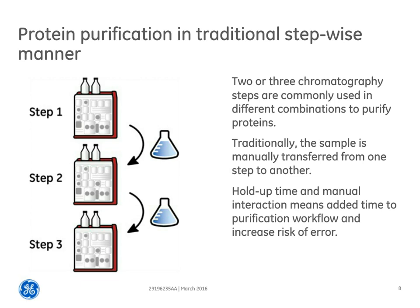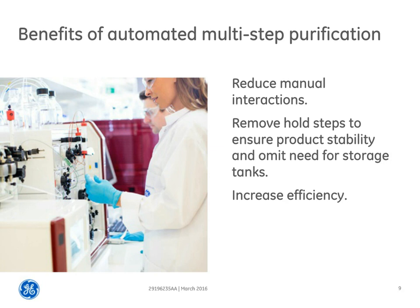In many cases, the conditions used to elute the protein in the first step are not optimal for the product. It could be too high a salt concentration or too low a pH, and therefore time between steps is crucial to maintain high stability of your product. By running automated multi-step purification using an ECTA Pure or an ECTA Avant, you will reduce manual interaction and remove the need for storage tanks between different chromatography steps. This will increase efficiency of your process, but also the stability of your product.